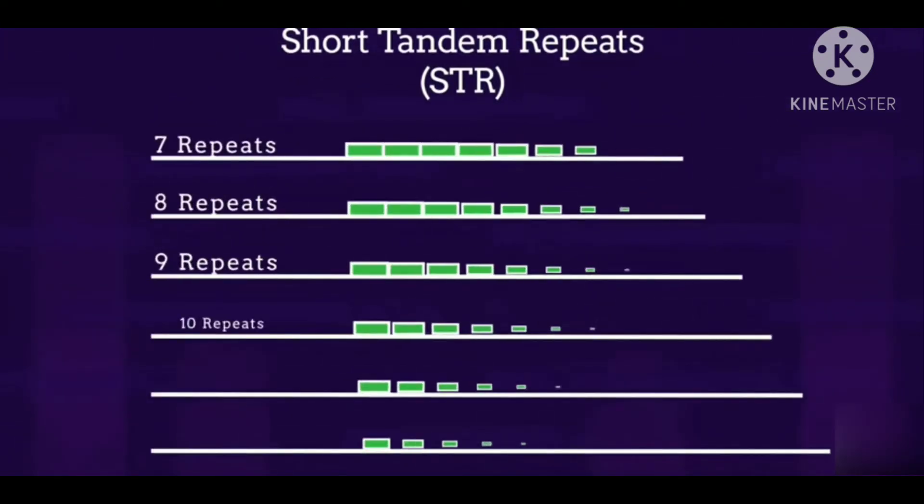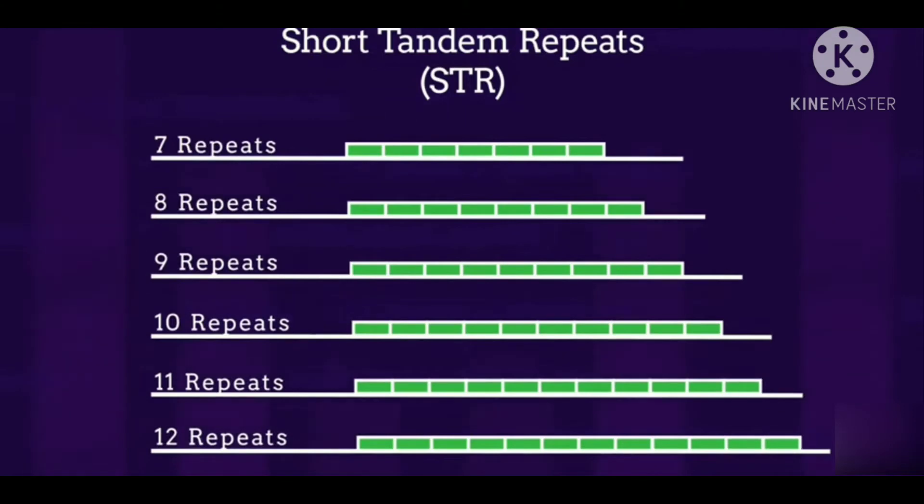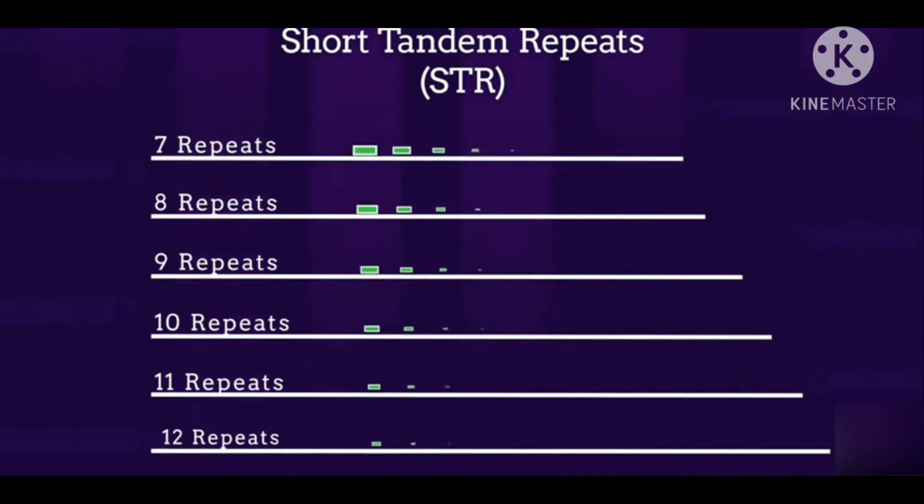At these places on the chromosomes where we find these STRs, there are areas that vary in number of repeats. DNA profiling only looks at these STRs.